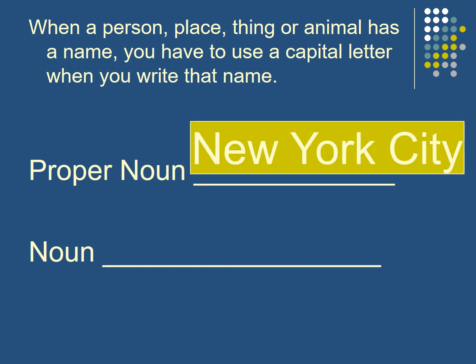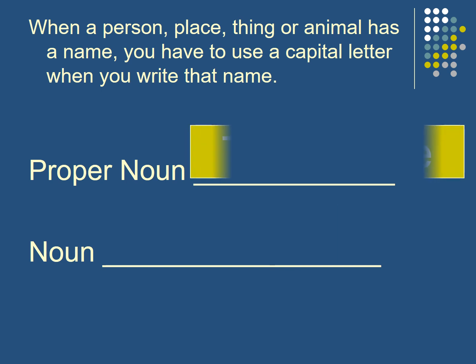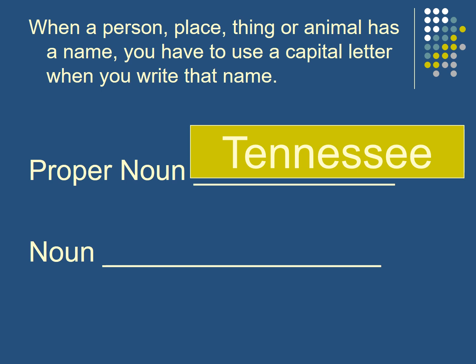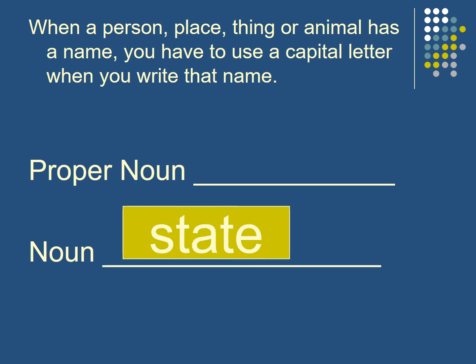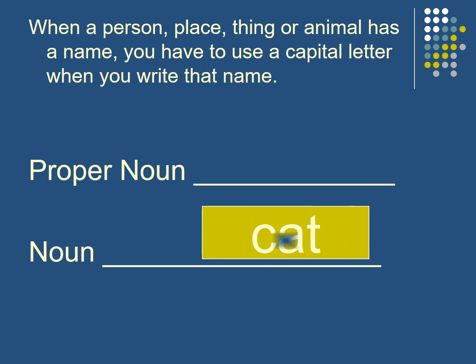If I have New York City, it's the name of the city. What about city? It's any city, so it's a small letter — not a proper noun. Texas is a name of a place, so I have to capitalize it. What about state? It's any state — like the United States has many states. What about Sam? It's a name of a boy. If I say boy or cat, it's any cat, any boy — so it's not capital.